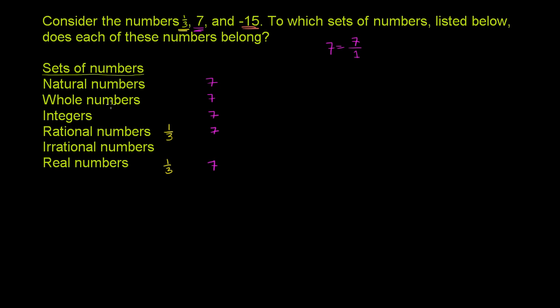Because that would just be 0 plus 1, 2, 3, 4, 5. It is an integer though. It is an integer. So it is negative 15 is right over here. You can view natural numbers as all positive integers. You could view whole numbers as all non-negative integers. And of course, integers will include negative and non-negative integers. And that's where negative 15 is going to sit.